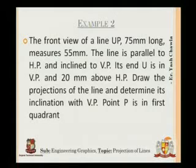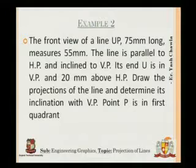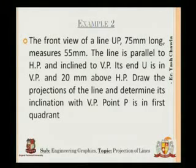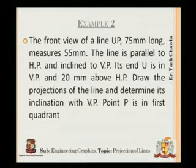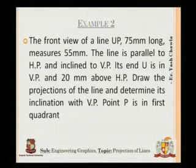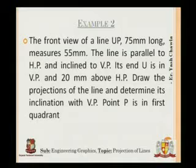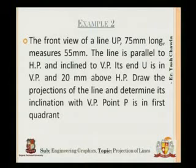Now let's move to a more complex problem. The front view of a line UP, 75mm long, measures 55mm. The line is parallel to HP and inclined to VP. Its end U is in VP and 20mm above HP. Draw the projection of the line and determine the inclination with VP. Point P is in the first quadrant.